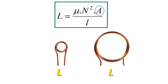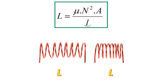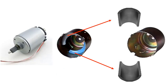What is the relationship between the cross-sectional area and the inductance value? As the cross-sectional area decreases, the inductance value decreases, and when the cross-sectional area increases, the inductance value increases. Finally, when the coil length increases, the inductance value decreases, and when the length decreases, the inductance value increases.